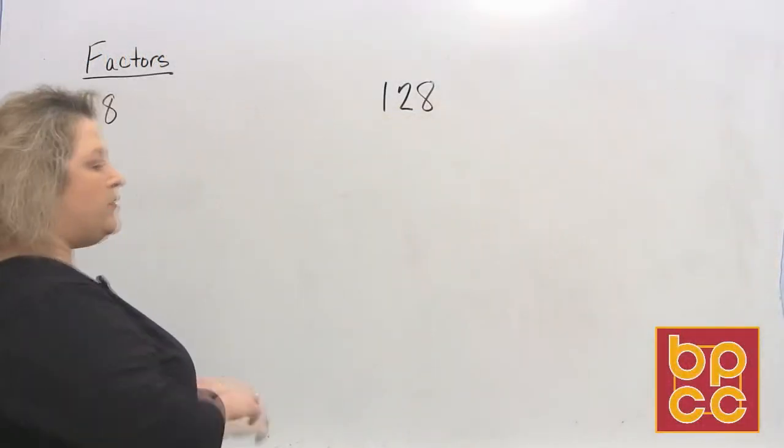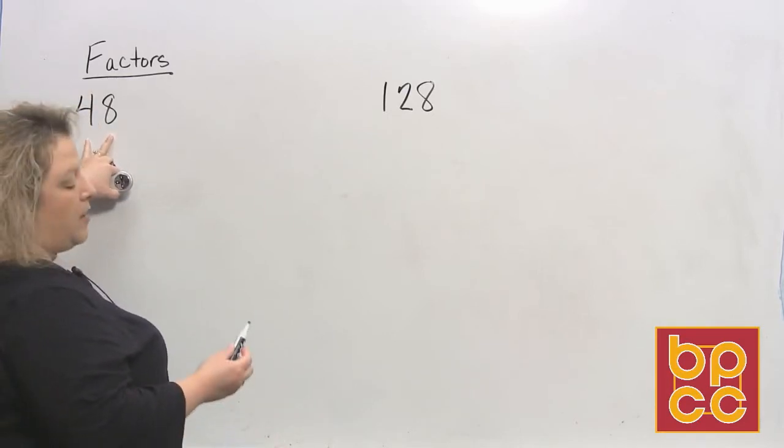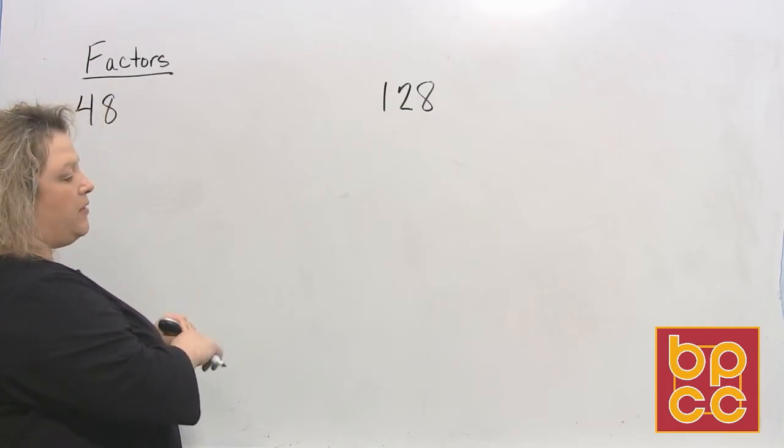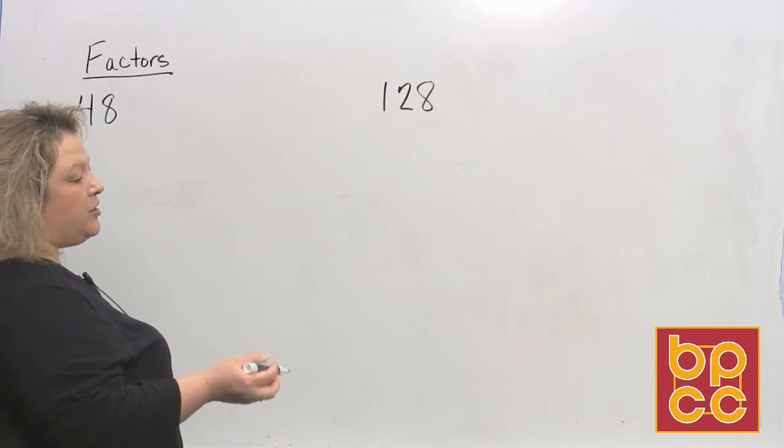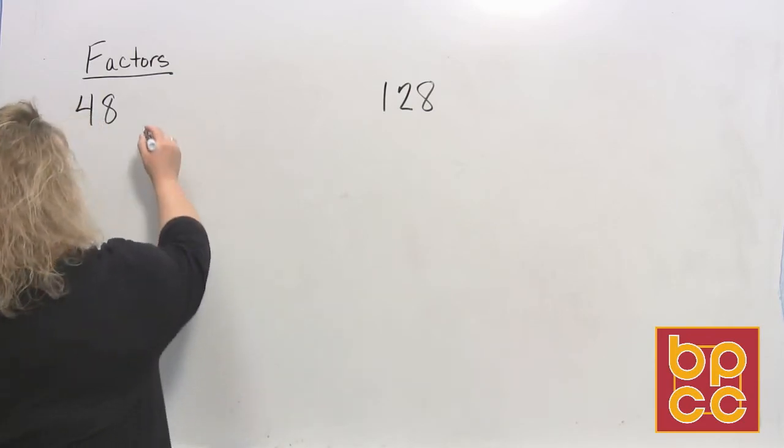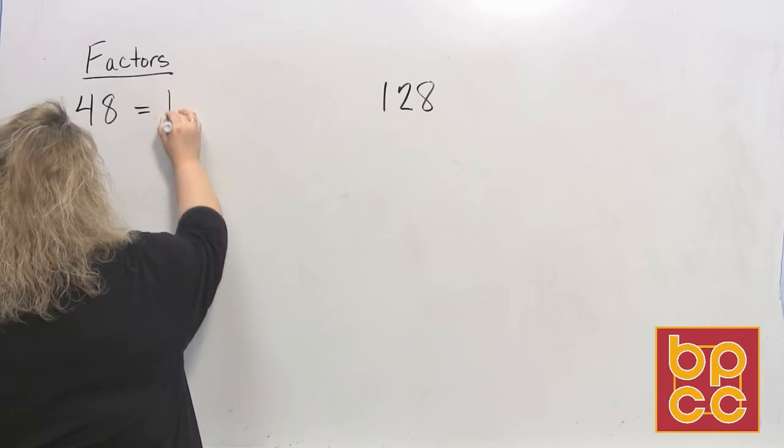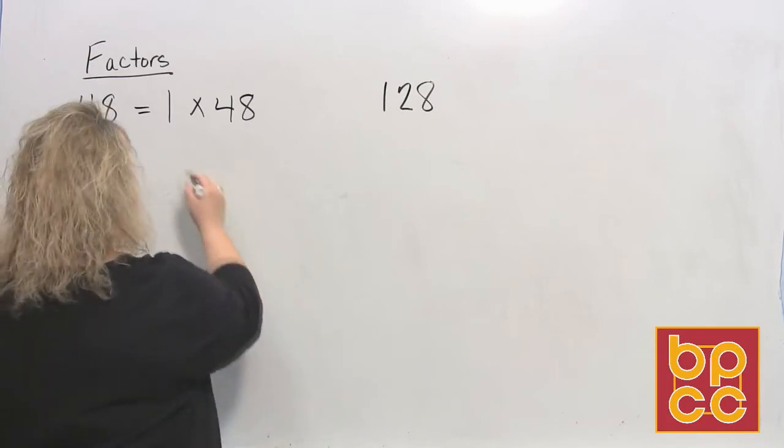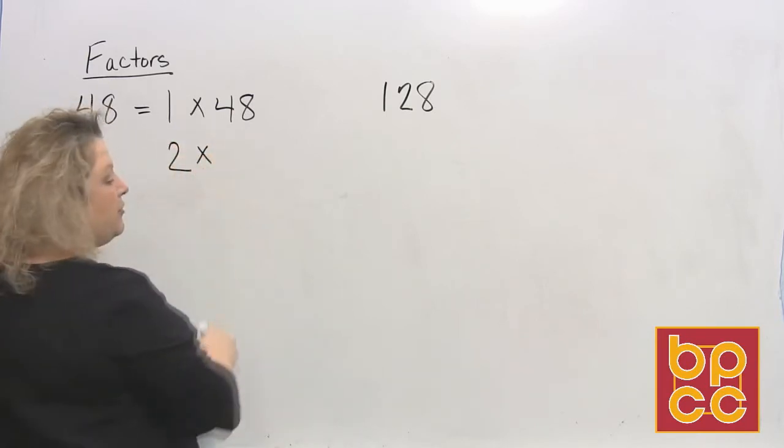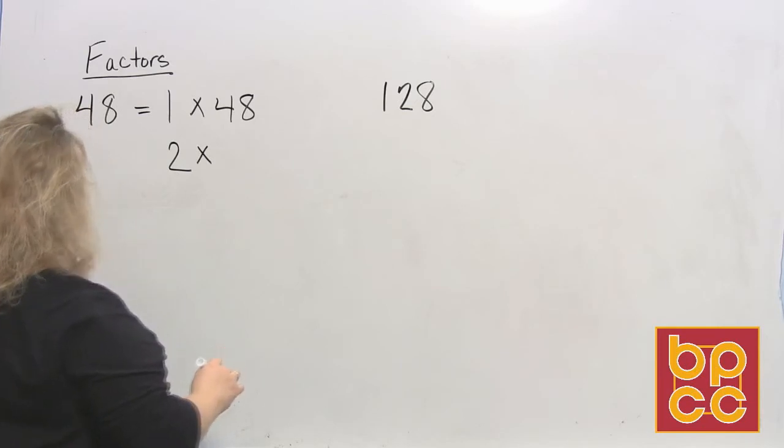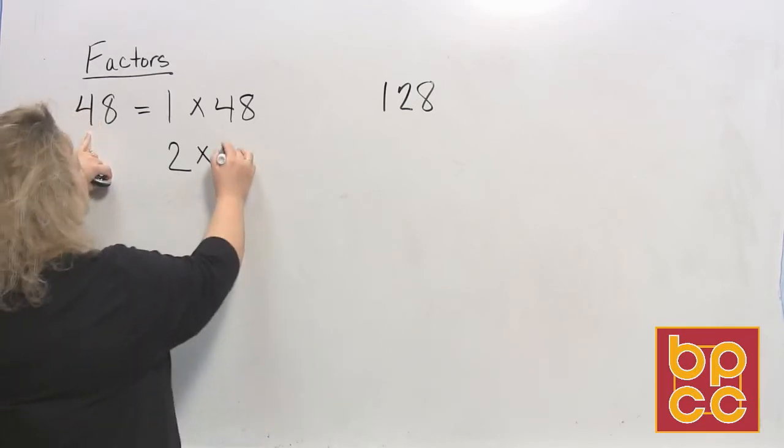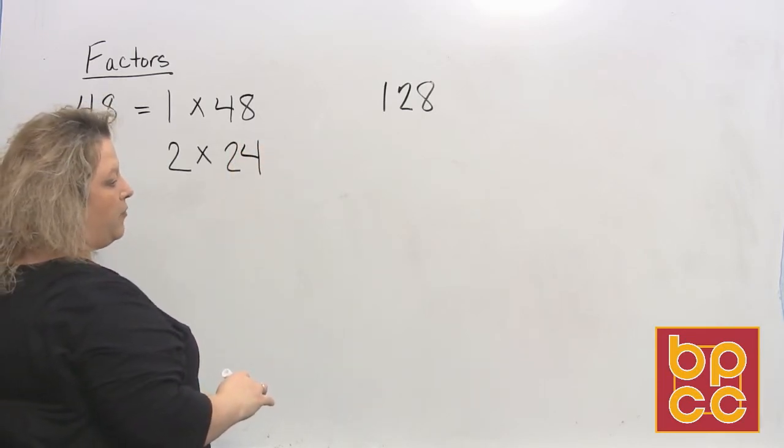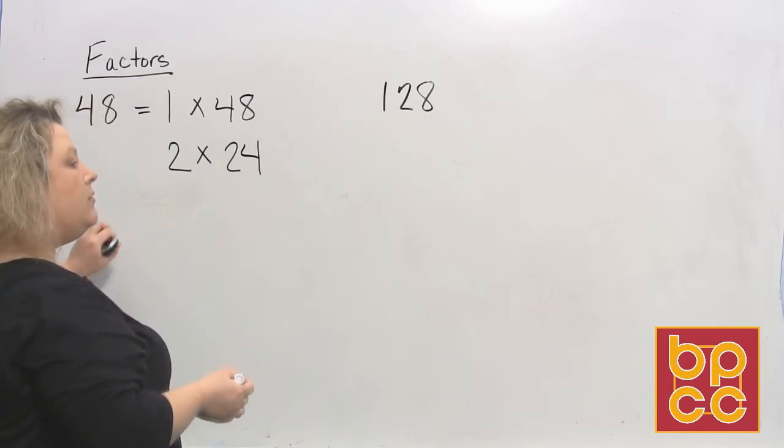When we do this, we ask ourselves, alright, this number 48 ends in the digit 8. One of the divisibility rules says if it ends in 0, 2, 4, 6, 8, then 2 divides into it. That would mean this is 1 times 48 because 1 times anything will always give you that number. It is an even number, so 2 divides into it automatically. 2 divides into 4 two times, and 2 divides into 8 four times. So 2 times 24 makes 48.